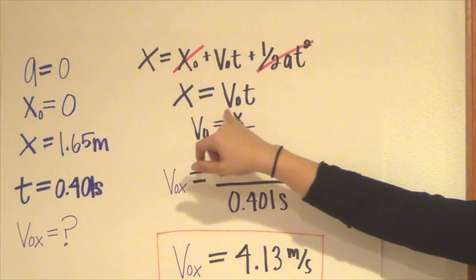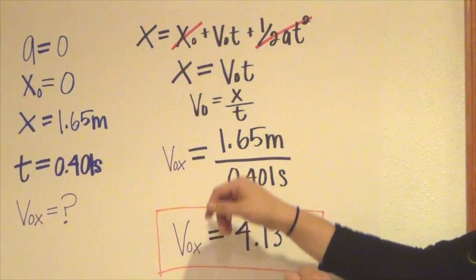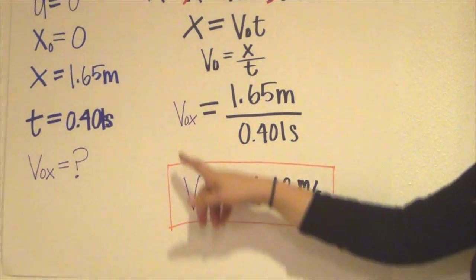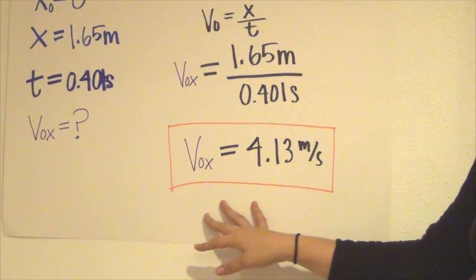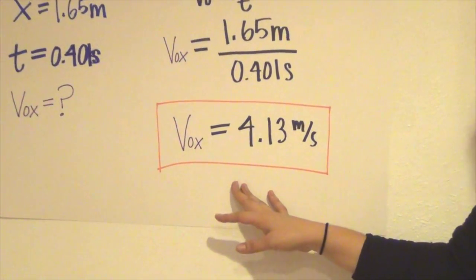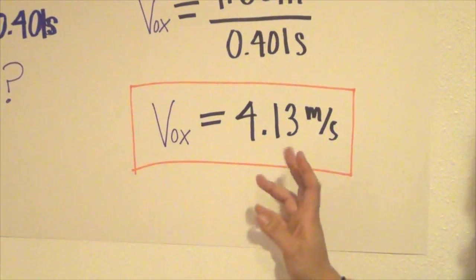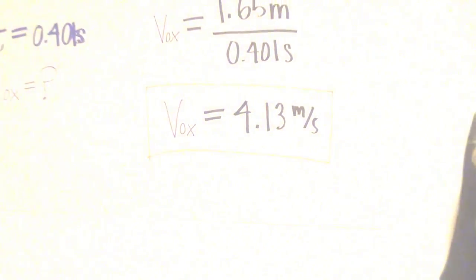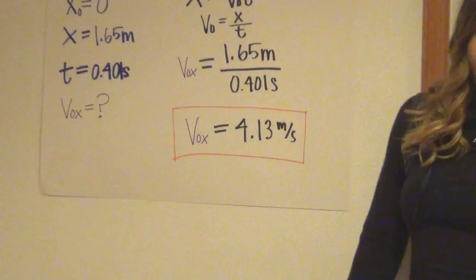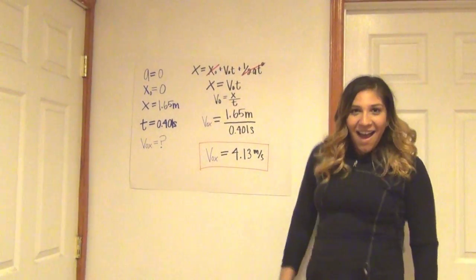We're left with x equals v naught t, and the initial velocity equals x over time. Now we plug those in and we get our initial velocity to be 4.13 meters per second. There you go.